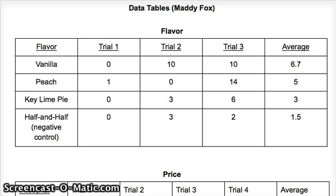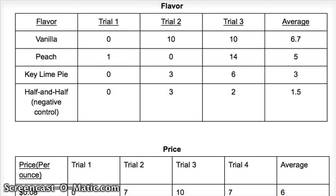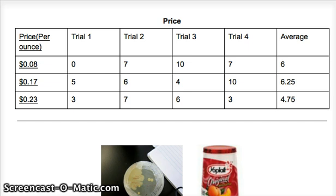These are our data tables. The first one is for flavor. As you can see, the first trial for flavor is a little messed up — the range is really big, which means there's almost no correlation. The same thing for price: there's almost no correlation. There is some, but there's a big outlier for the 17-cent yogurt on trial four, which messed up the averages a little.